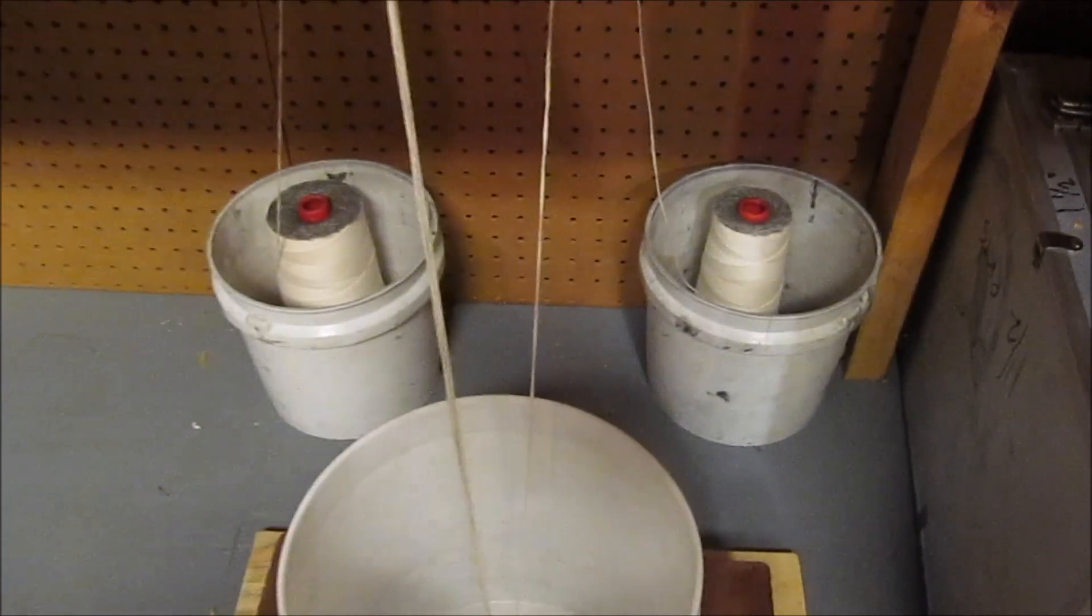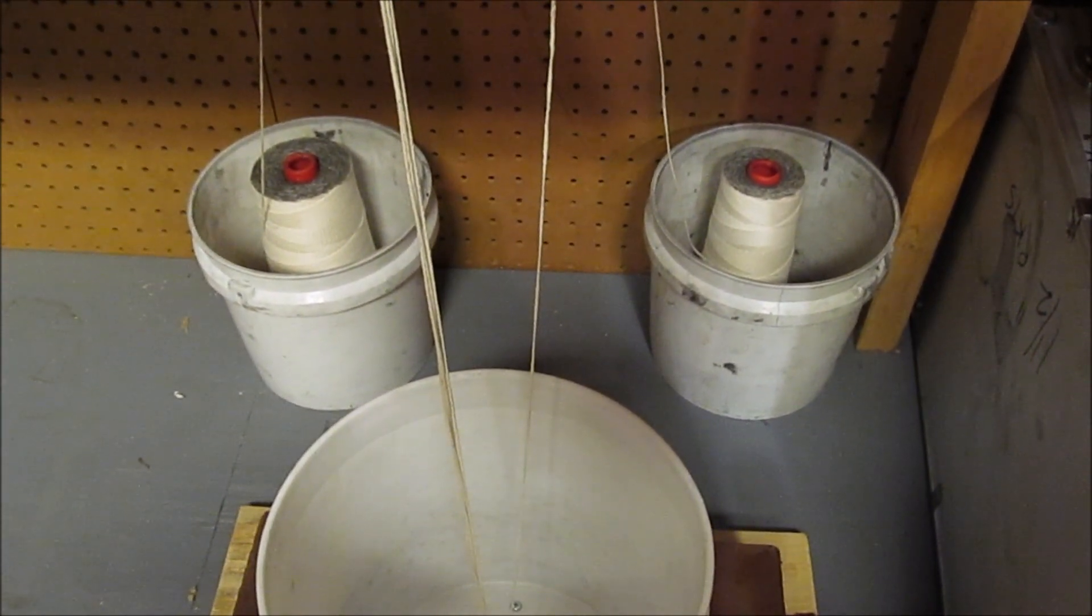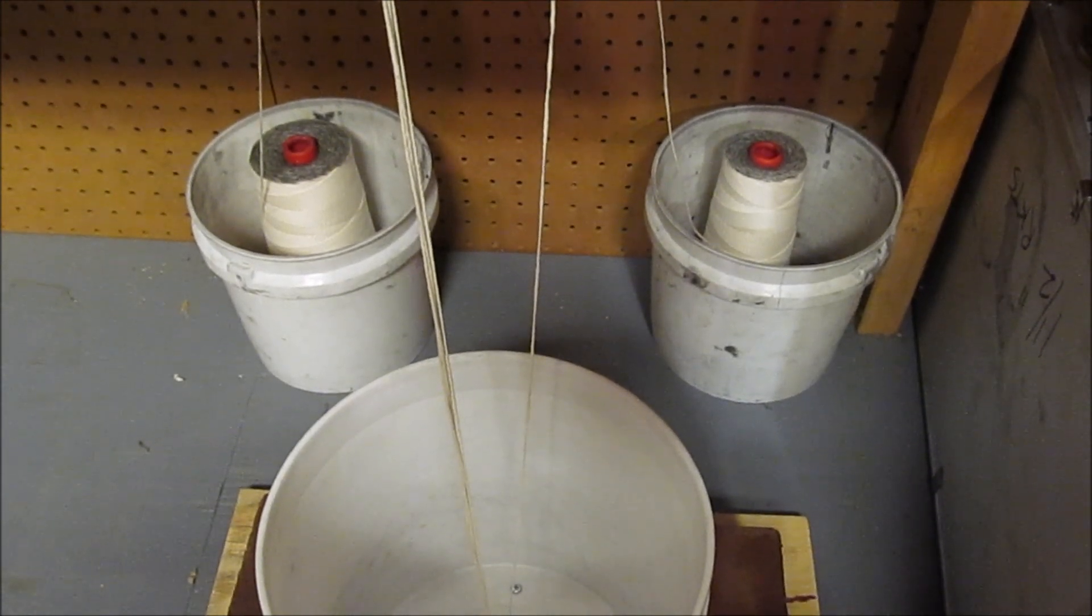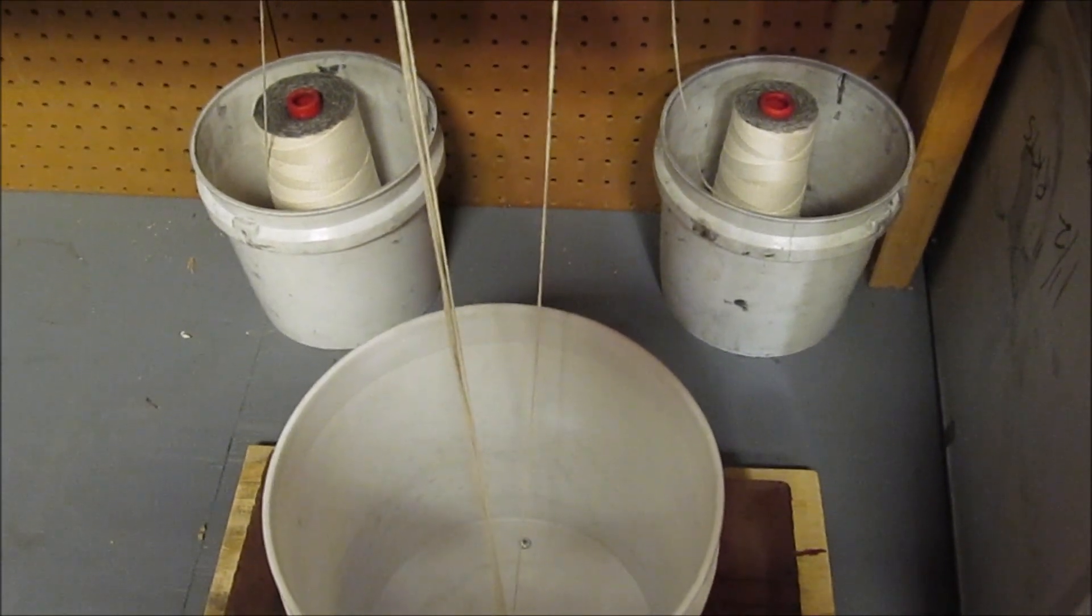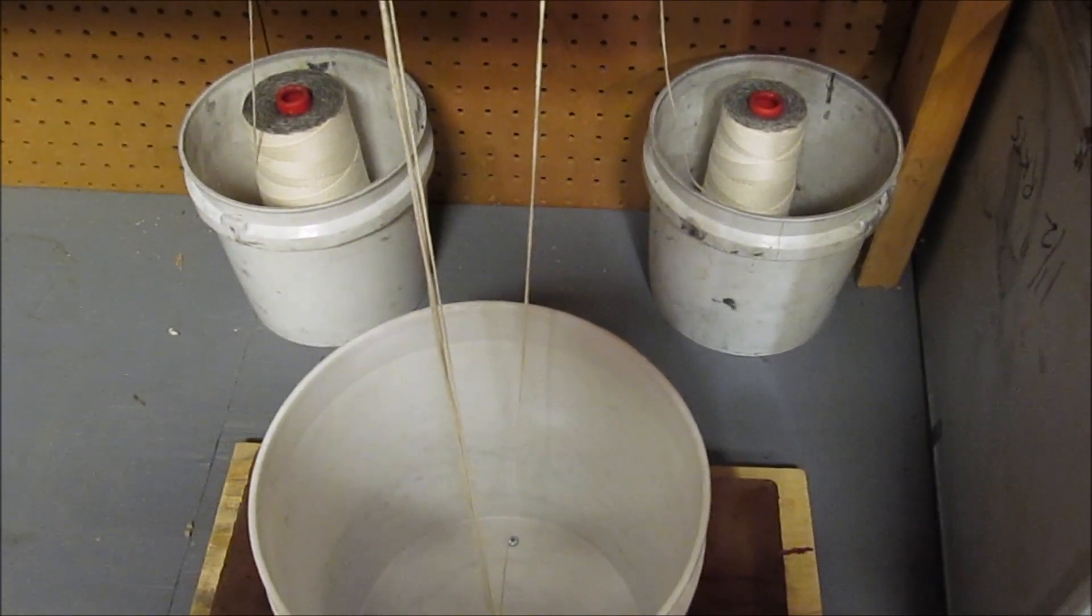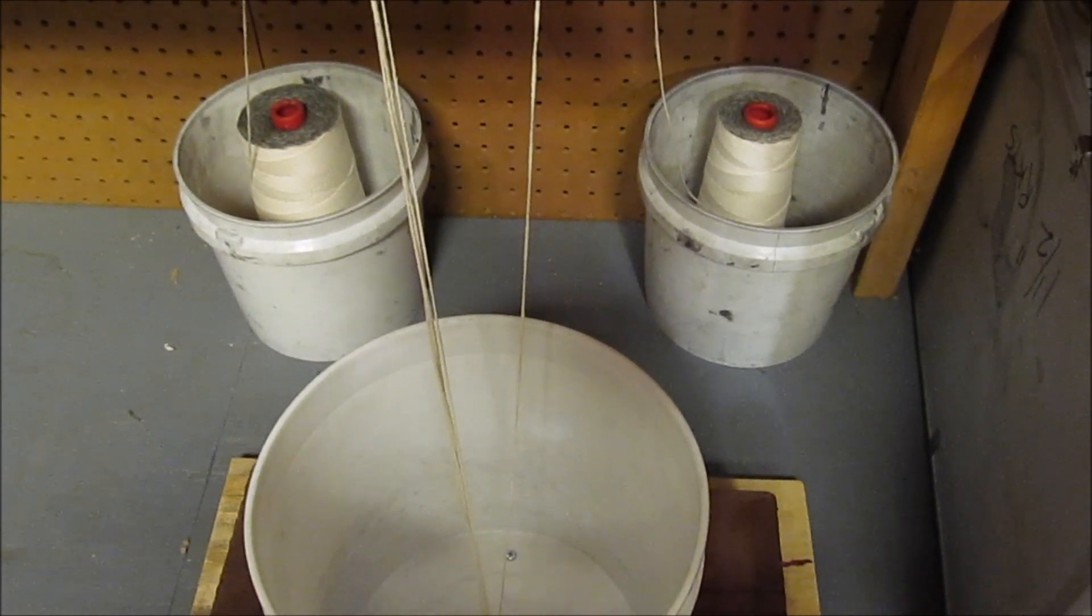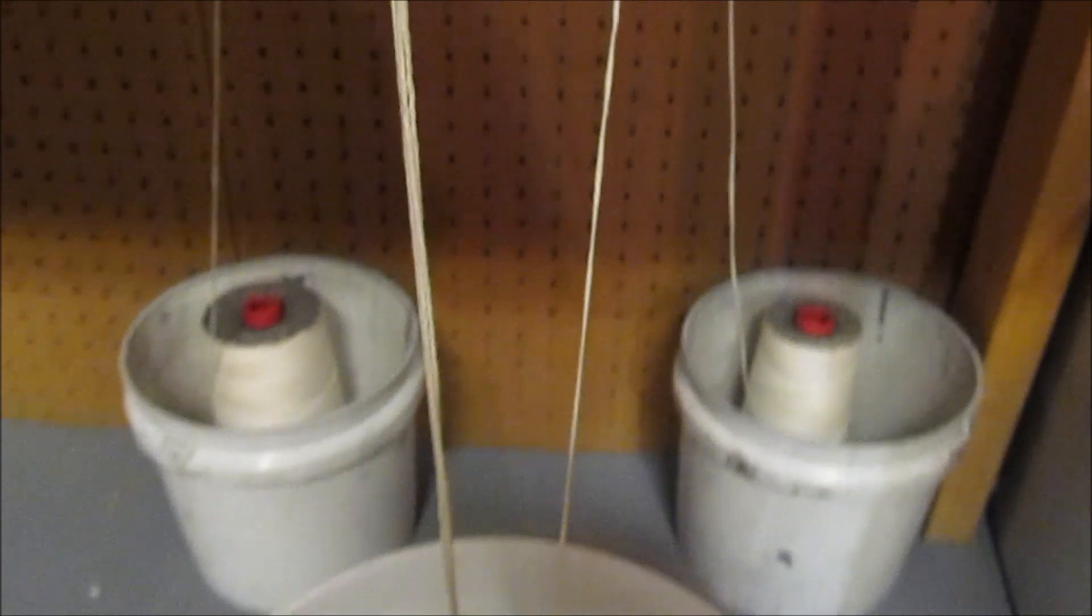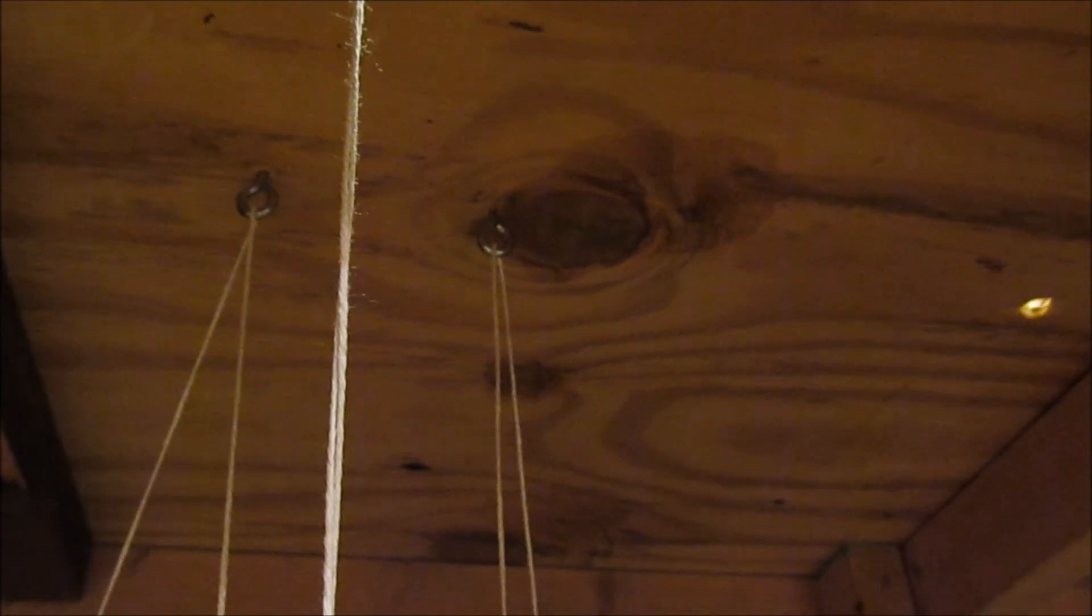Essentially, I have two cones of 8-ply polycotton string in buckets at the back of the station on the floor. That string goes up out of those buckets, off the cones, up to the bottom of the workbench through two screw eyes.